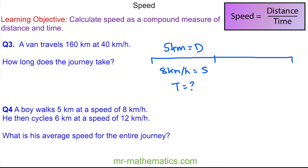And in the next part of our journey he cycles six kilometers at a speed of 12. So now the distance is six and the speed is 12, and again I do not know the time.